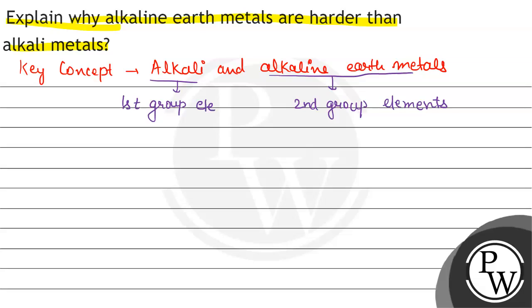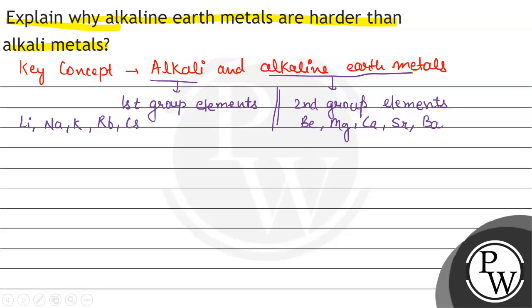Alkali metals are the first group elements, and the elements present in the first group are lithium, sodium, potassium, rubidium, and cesium. The second group elements — the alkaline earth metals — are beryllium, magnesium, calcium, strontium, and barium. These are some second group elements.